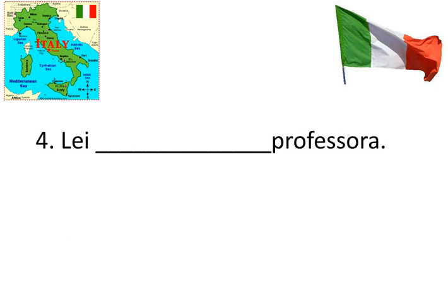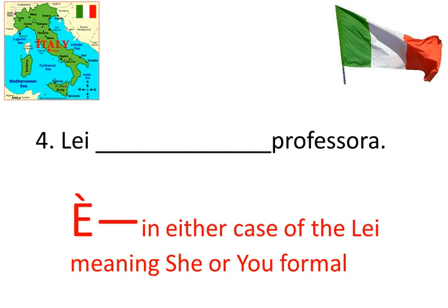Numero 4: Lei blank professoressa. It's a tricky one here because lei means she. Lei also means you formal. Now lei uncapitalized is she; if the L is capitalized it is you formal. But this is at the very beginning of a sentence, so we actually don't know whether this is referring to she or you. But it doesn't really matter because it's going to be è either way. Lei è professoressa — this sentence could mean you are a professor or it could mean she is a professor. The è corresponds to lui, lei, and the capital-L Lei. Make a note of that.